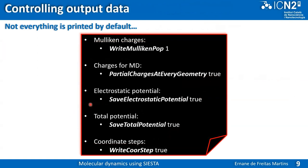Not everything is printed by default in SIESTA, so for production runs you need to think in advance about what post-processing you want to do and save the files you will need. For example, you can save Mulliken populations, save partial charges at every geometry step by setting that option to true — though this generates many megabytes of files. You can also save the electrostatic potential, the total potential, and write coordinate steps.